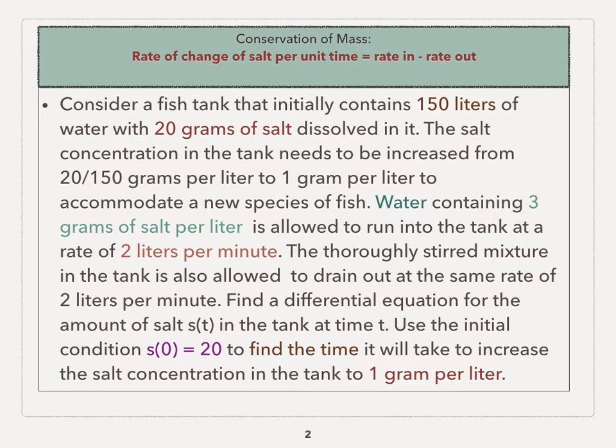Let's consider the following example. We'll consider a fish tank that initially contains 150 liters of water and 20 grams of salt dissolved in it. The salt concentration in the tank needs to be increased from 20 over 150 grams per liter to 1 gram per liter to accommodate a new species of fish.